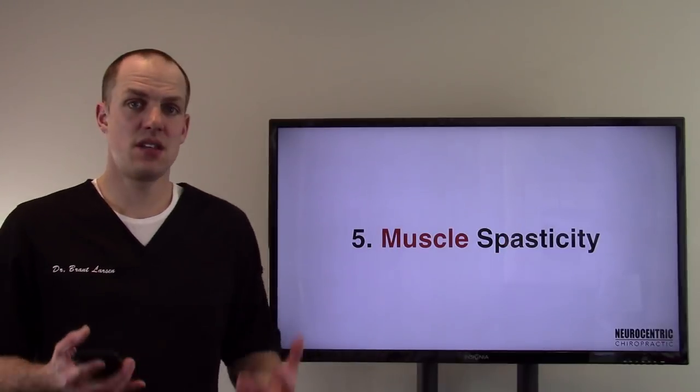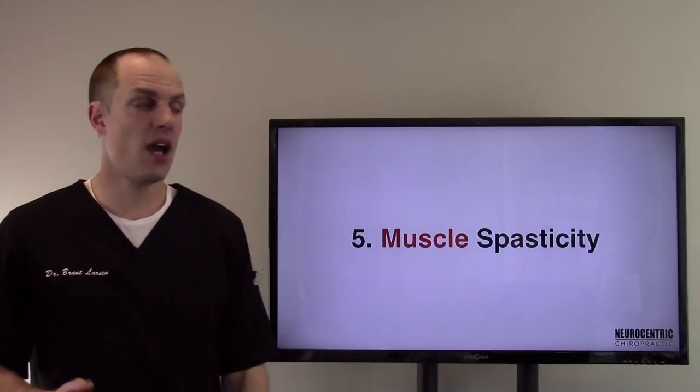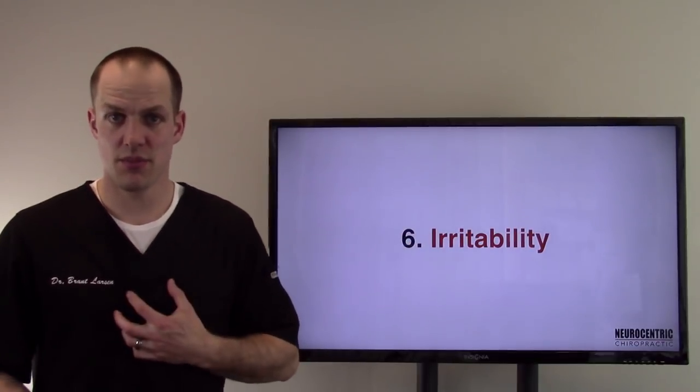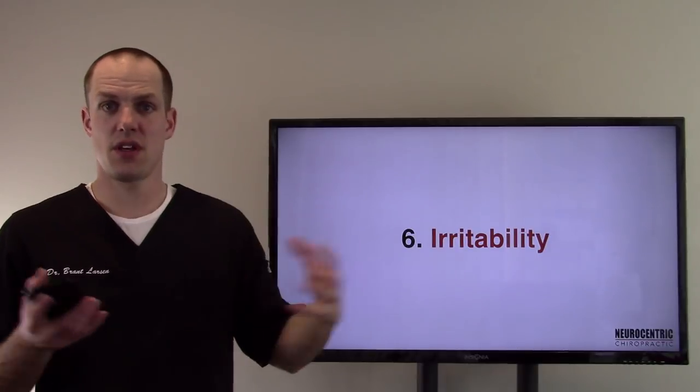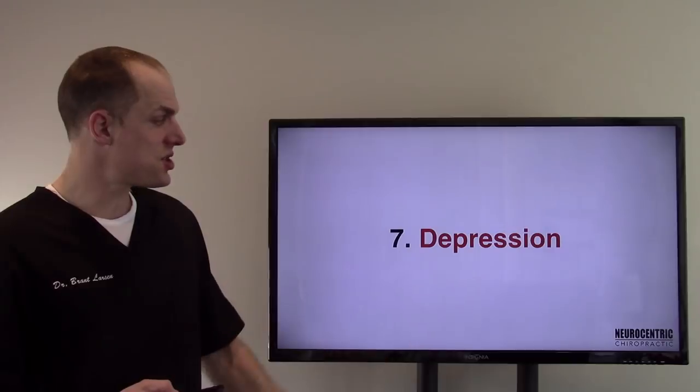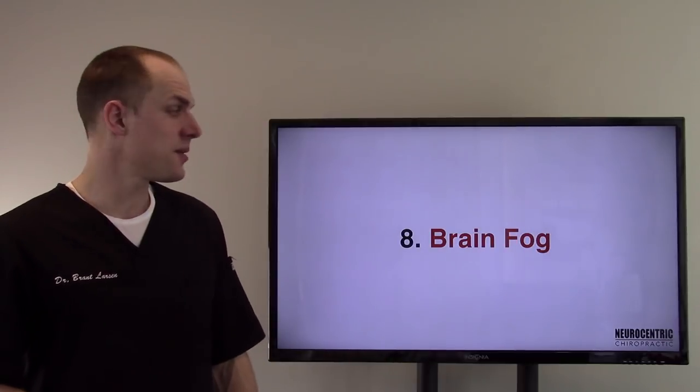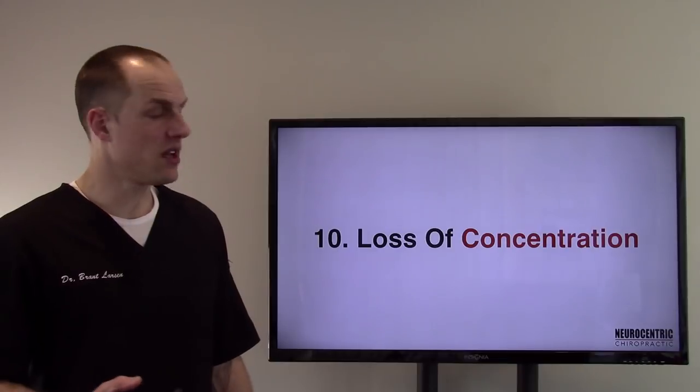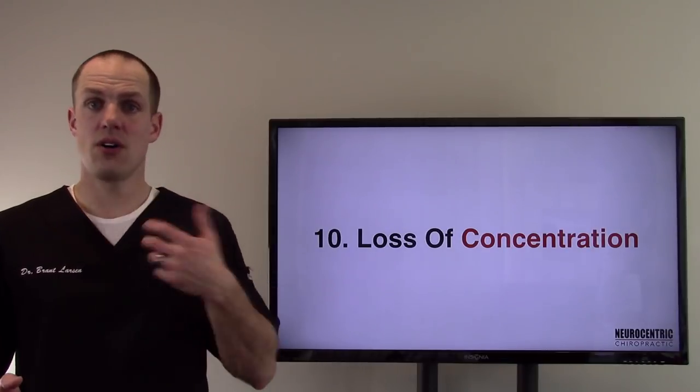Five, muscle spasticity, being spastic and tight. Six, irritability. Now we're getting into the central nervous system, the brain up here versus the extremities and periphery. Irritability, depression, brain fog, fatigue, kind of body fatigue, loss of concentration. Again, these are all brain problems.